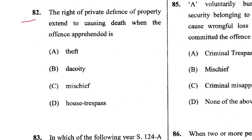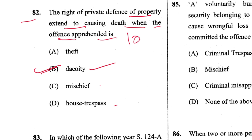Question 82: The right of private defence of property extends to causing death when the offence apprehended is robbery, house-breaking by night, mischief by fire, or trespass. B is the answer. This provision is in Section 103 of IPC.